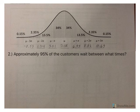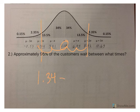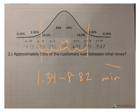Approximately 95% of the customers wait between what times? Remember, 95% is two standard deviations from the mean. So from the mean, 1, 2, 1, 2. So we would say 1.34 to 8.82 minutes. That's 95% of customers.